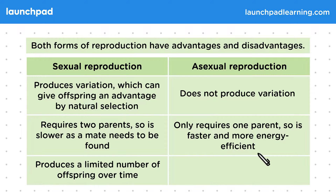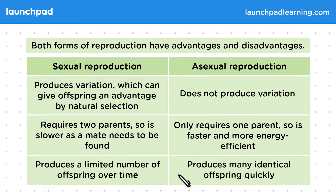Finally, sexual reproduction produces a limited number of offspring over time, however asexual reproduction produces many identical offspring quickly.